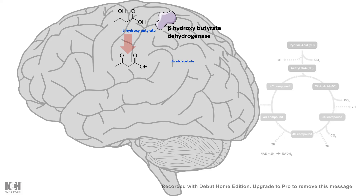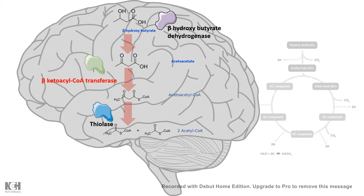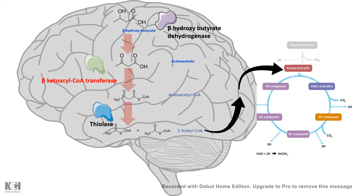Beta-hydroxybutyrate is first broken down by beta-hydroxybutyrate dehydrogenase to form acetoacetate. From acetoacetate, the most important enzyme is beta-ketoacyl-CoA transferase, which converts acetoacetate to acetoacetyl-CoA. Importantly, this enzyme is not present in the liver — if it were, the liver would make and break down ketone bodies in a futile cycle. Then acetoacetyl-CoA is broken down by thiolase to acetyl-CoA, which is funneled into the citric acid cycle to produce ATP, keeping the brain going.